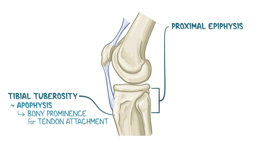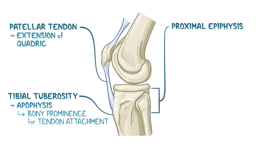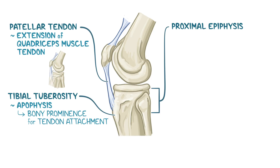The tibial tuberosity specifically serves as the attachment site for the patellar tendon, which is an extension of the quadriceps muscle tendon. When the quadriceps muscle contracts, the patellar tendon tightens, extending the knee.